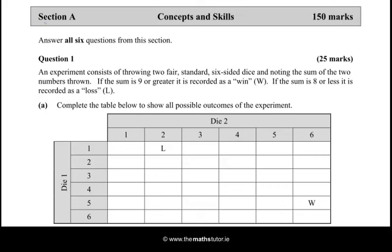This table is called a sample space and we can see that there is an L in the space where we add 1 and 2 which gives us 3, which is clearly a loss because it is 8 or less. So in the first row we can put L everywhere because if you add 1 to the numbers 1, 2, 3, 4, 5 and 6 we will get 8 or less. Similarly, the highest number we could get when adding 2 would be adding it to 6 and that gives us 8. So all of the second row will be L's as well.